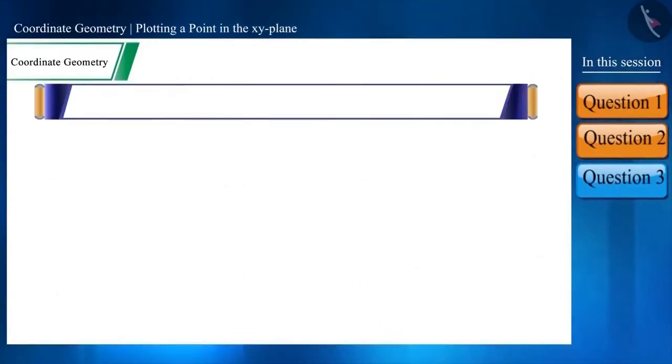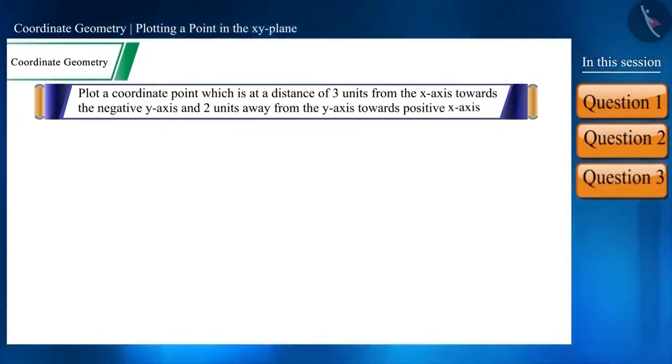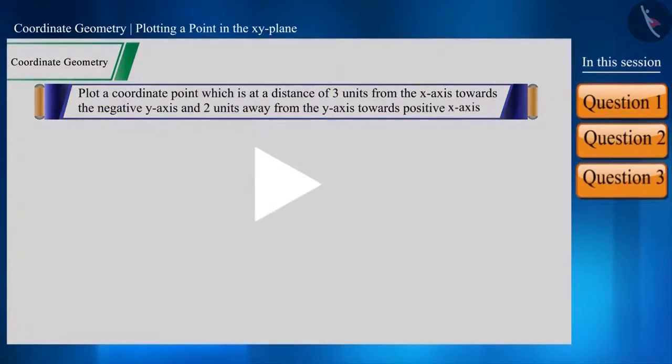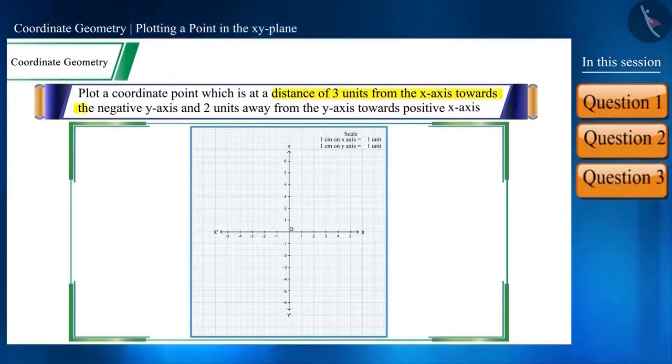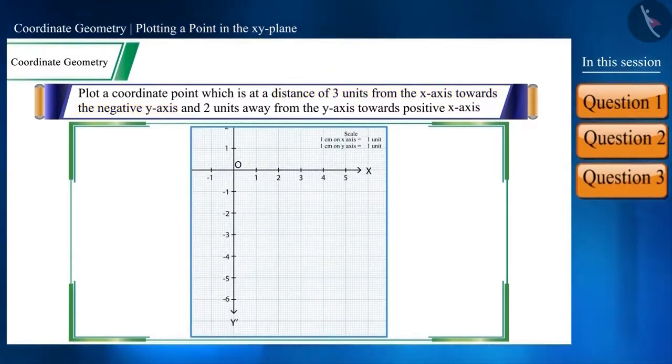Friends, let's take a word problem. Plot a coordinate point which is at a distance of 3 units from the x-axis towards the negative y-axis and 2 units away from the y-axis towards positive x-axis. Friends, keeping in mind the information given here, you have to solve it. Try to solve this question yourself by pausing the video. The first line says that the point is at a distance of 3 units from the x-axis to the negative y-axis. That is, minus 3 to the y-axis. And from y-axis towards positive x-axis at a distance of 2 units. That is, 2 units from minus 3 on the y-axis to the positive x-axis. That is, it is in the fourth quadrant.